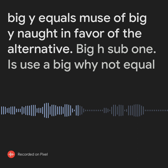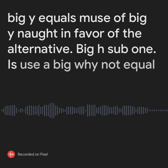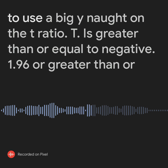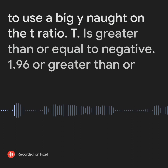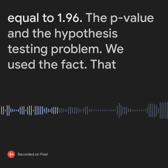We reject in favor of the alternative H_1 that mu sub Y is not equal to mu sub Y-naught when the t-ratio t is less than or equal to negative 1.96 or greater than or equal to 1.96.